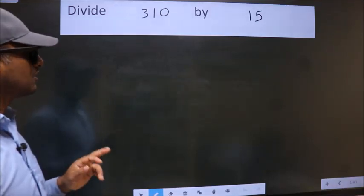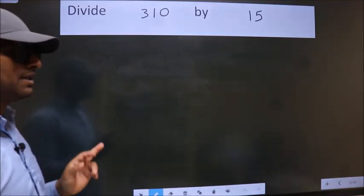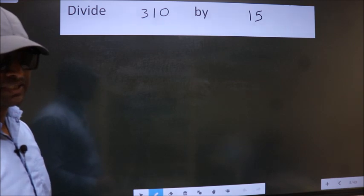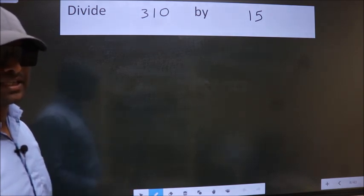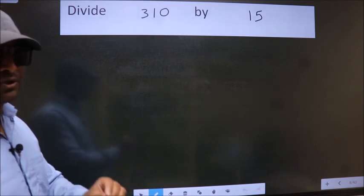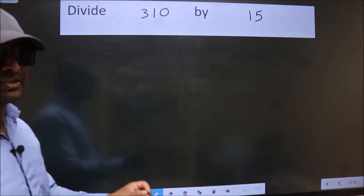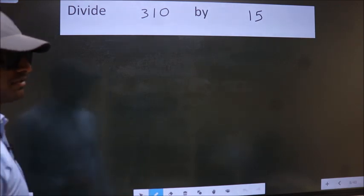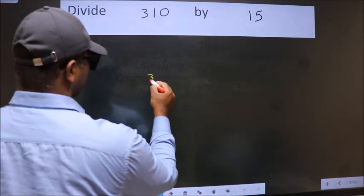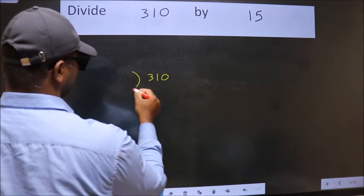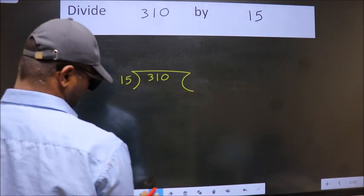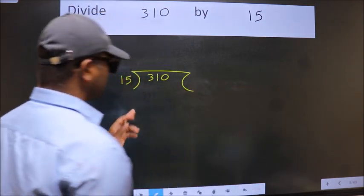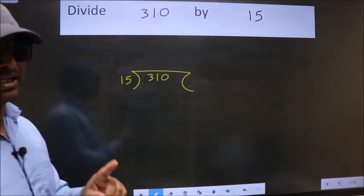Divide 310 by 15. While doing this division, many do this mistake. What is the mistake that they do? I will let you know. But before that, we should frame it in this way. 310 here, 15 here. This is your step 1.